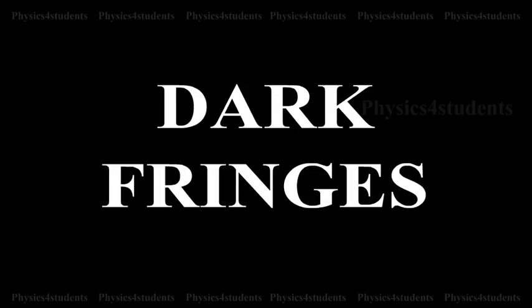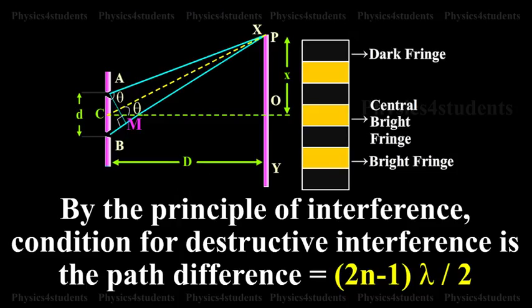Dark Fringes. By the principle of interference, condition for destructive interference is the path difference. That is equal to 2n minus 1 into lambda divided by 2.